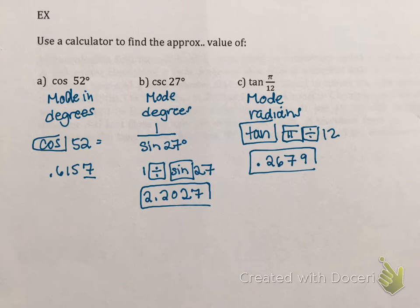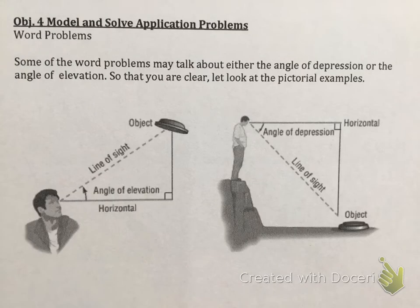Objective number four is model and solve application problems. So some of the word problems may talk about either the angle of depression or the angle of elevation. So it's good to know the difference between the two. The one on the left, the little diagram here, the horizon line is right at the guy's eyes. So if the horizon line is straight out, and then we have some object in the sky, that forms a right angle. The angle of elevation is the one right in here. Angle of depression. So once again, the sight line is the horizontal line. Wherever the object is, it forms 90 degree. And the angle of depression is actually over here. It's your sight line down to the object. So hopefully that makes a little more sense.